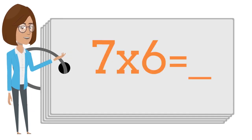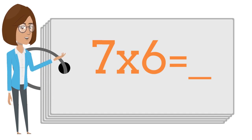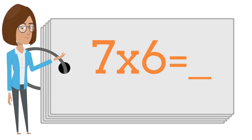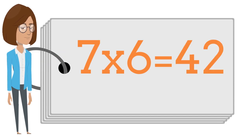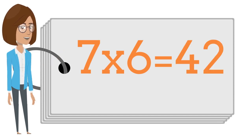7 times 6 is — say the answer out loud. 7 times 6 is 42.